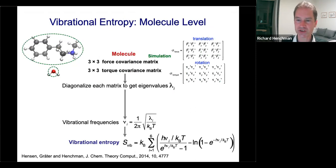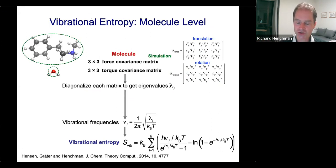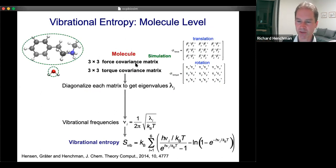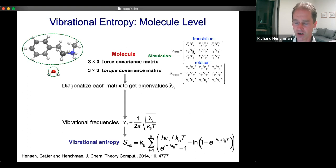Now for the vibrational term at the molecule level: we use forces to characterize the shape of the energy well and use correlation of forces. For the whole molecule level there are only three degrees of freedom — x, y, and z — so we have a 3×3 force covariance matrix, F_x times F_x, using mass-weighted forces which simplifies the mathematics for large molecules. We also have the rotational equivalent in terms of torques — a torque covariance matrix — with forces and torques coming from the MD simulation.